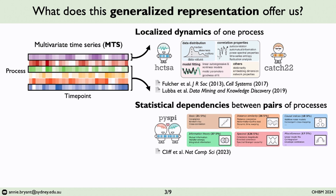And if you're interested in summarizing the functional connectivity between pairs of brain regions, you might consider using the Python toolkit of statistics for pairwise interactions, or PySPI, developed in lead by Oliver Cliff, who was a former post-doc with Ben. This brings together over 200 measurements of interactions between two time series, from the Pearson correlation coefficient, to spectral Granger causality, to information theory-based metrics like transfer entropy or directed information.